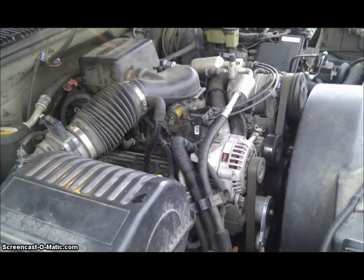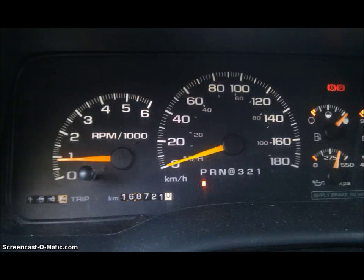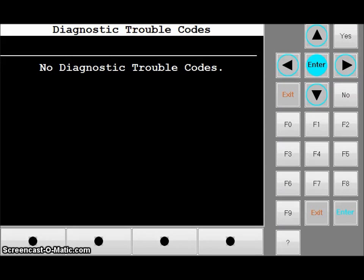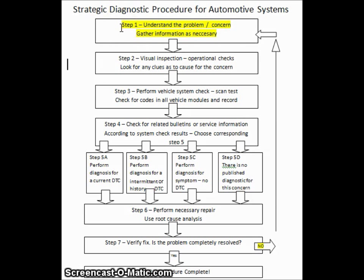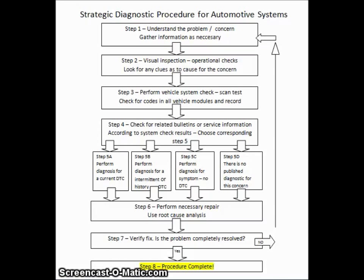Now let's verify that the problem is completely fixed. We can see that the engine is running just fine now. With the engine running, there is no longer a check engine light on, and we can see that there are no trouble codes set. If the problem was not completely resolved, we would need to follow the chart back up to step number one and re-examine the concern. If the problem is verified to be fixed, then we are done.